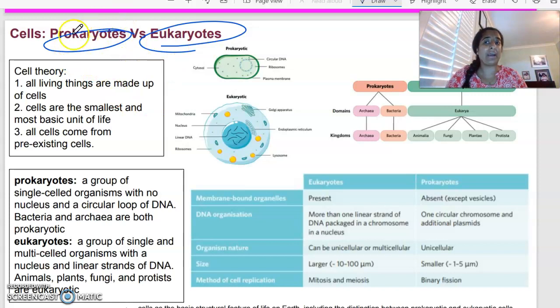When we talk about prokaryotes, as you can see, they have a very simple structure. They're single-celled organisms. They don't have a nucleus. Their DNA is usually circular as well. An example of a prokaryotic cell would be your bacteria.